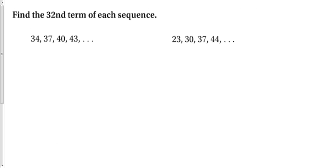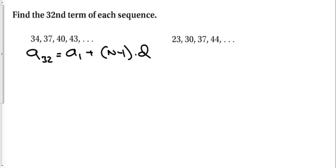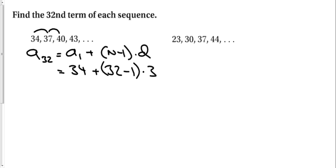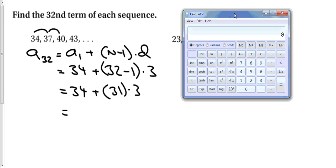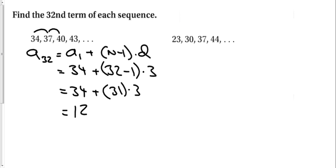Find the 32nd term of each sequence. We are going to use a sub 32 equals a sub 1 plus (32 minus 1) times d. Plugging in: 34 plus 31 times 3. Using the calculator, 31 times 3 is 93, plus 34 gives a total of 127.